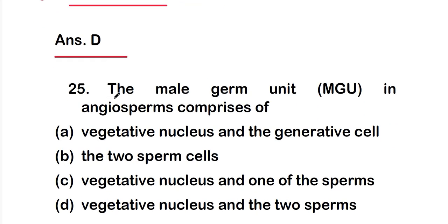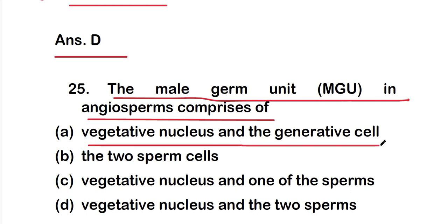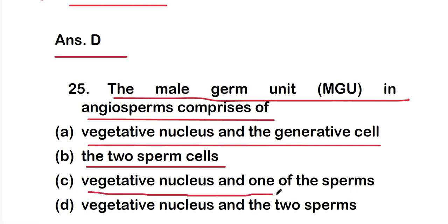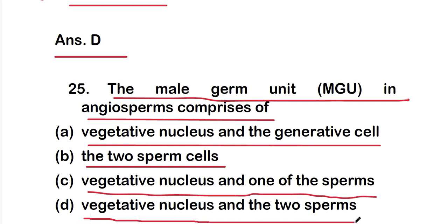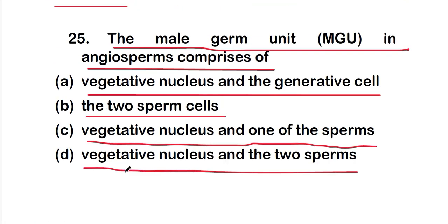Question 25: the male germ unit (MGU) in angiosperms comprises option A: vegetative nucleus and generative cell; option B: two sperm cells; option C: vegetative nucleus and one sperm; or option D: vegetative nucleus and two sperms. The right answer is option D — the male germ unit contains the vegetative nucleus and two sperms.